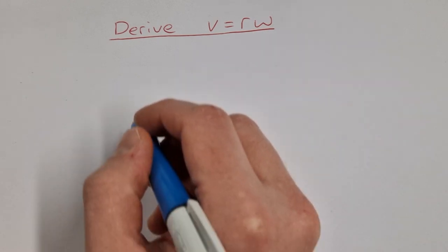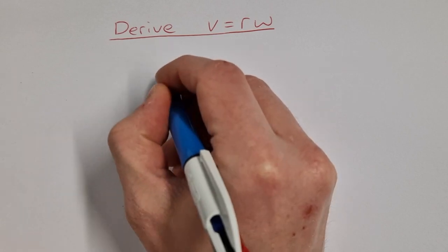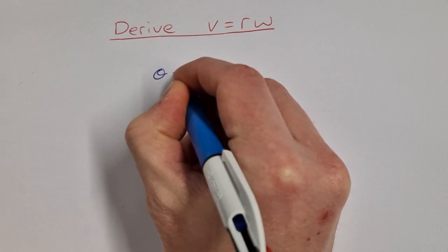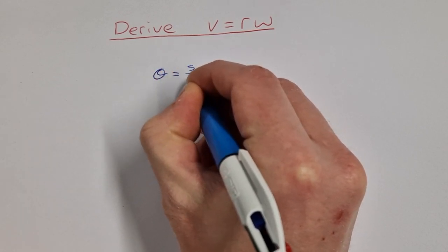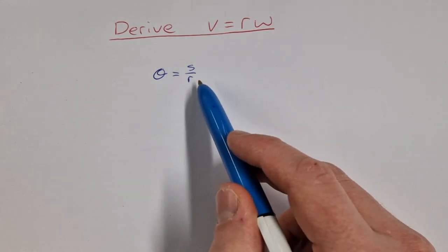So to do this we're going to start with the definition for a radian which is theta the angle is equal to s over r, s being the arc length and r being the radius.